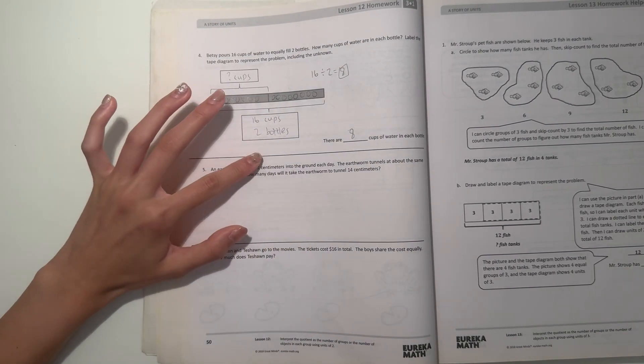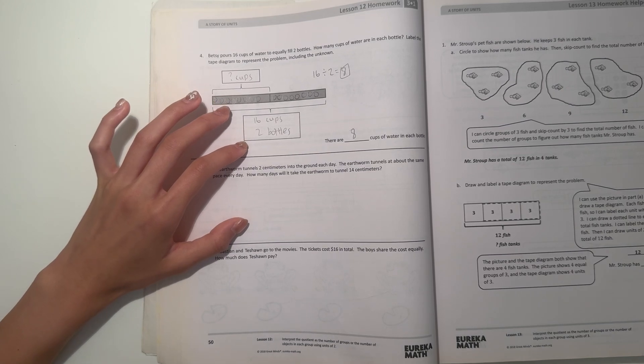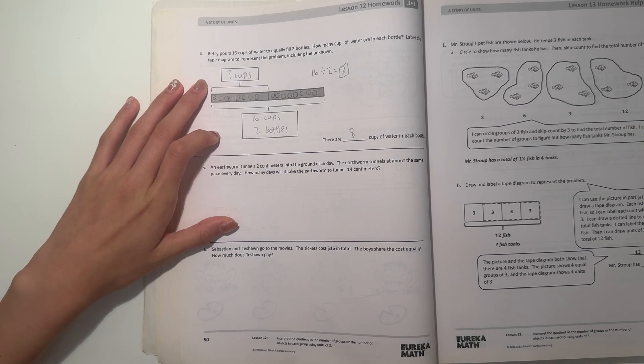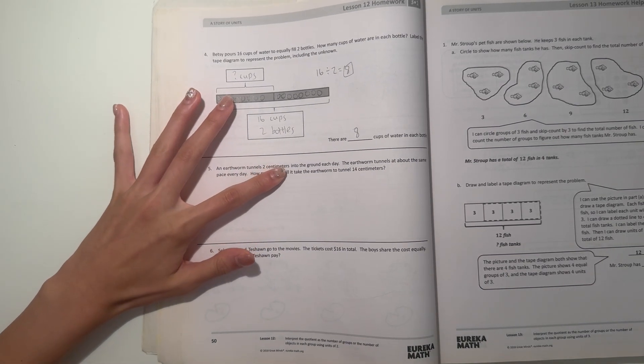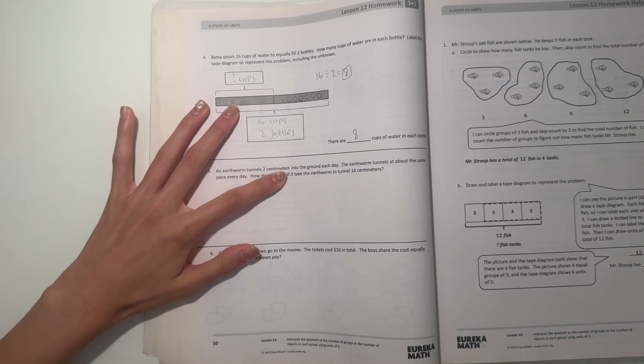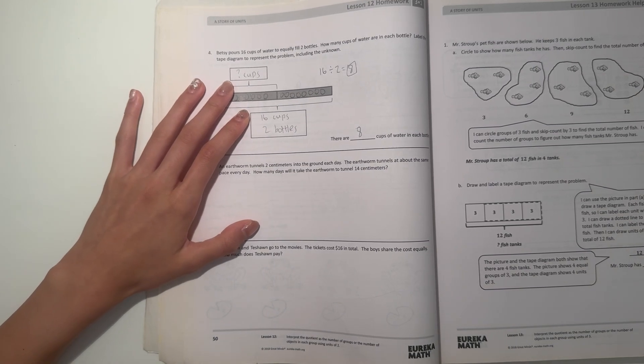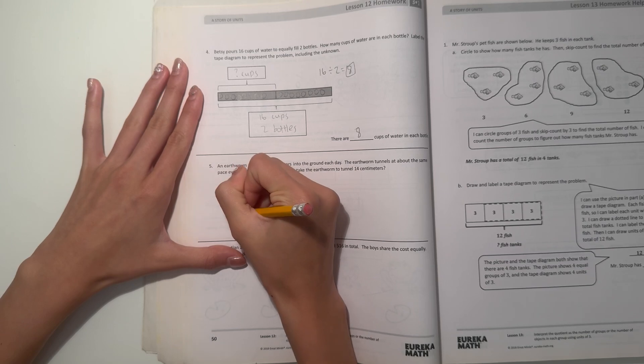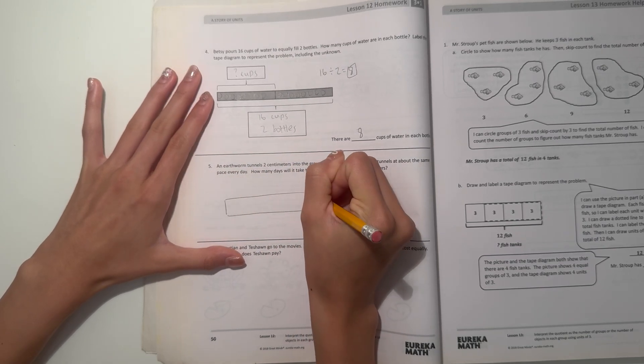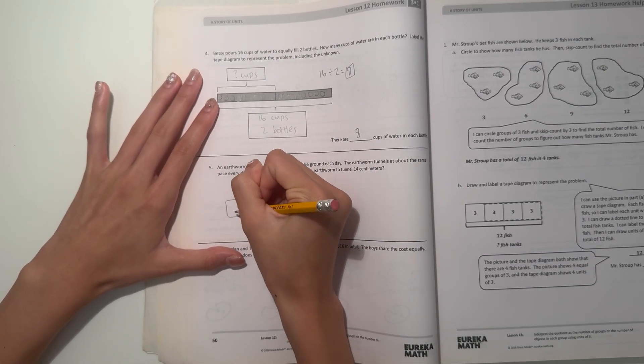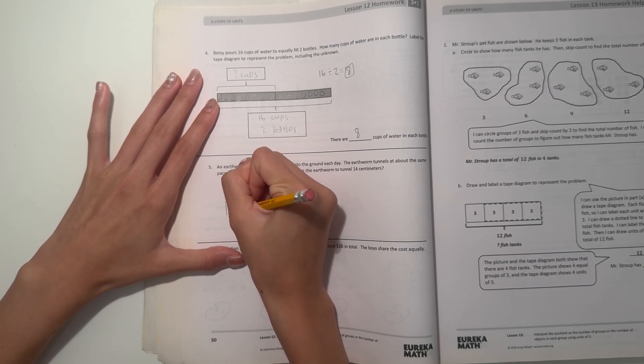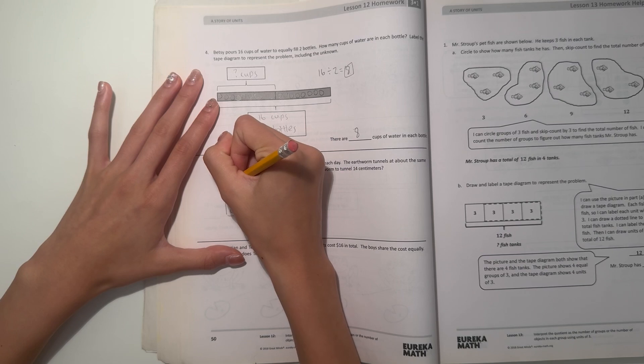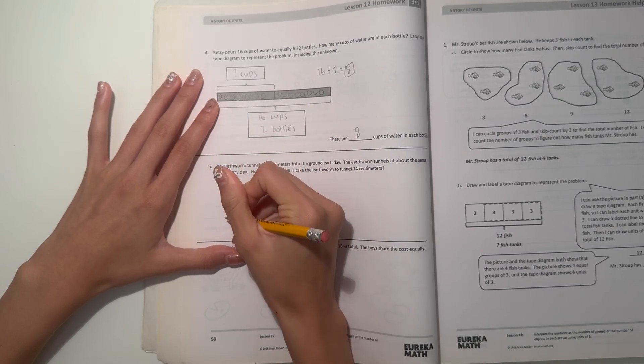Number 5. An earthworm tunnels 2 centimeters into the ground each day. The earthworm tunnels at about the same pace every day. How many days will it take the earthworm to tunnel 14 centimeters? Alright, so let's start with the tape diagram. So let's see, what do we know so far? So we know that the earthworm tunnels 2 a day, that's 2 centimeters a day.